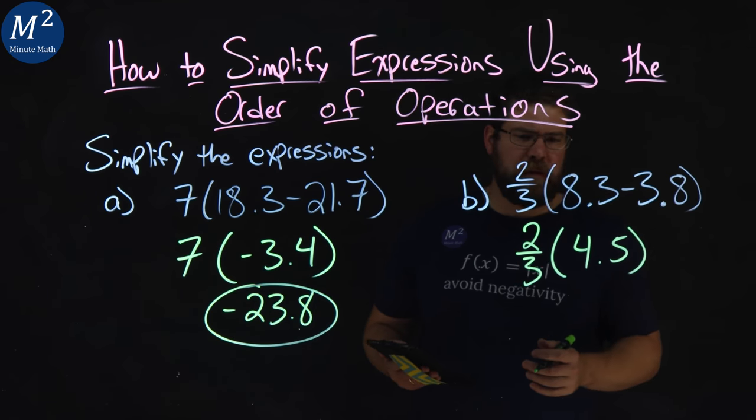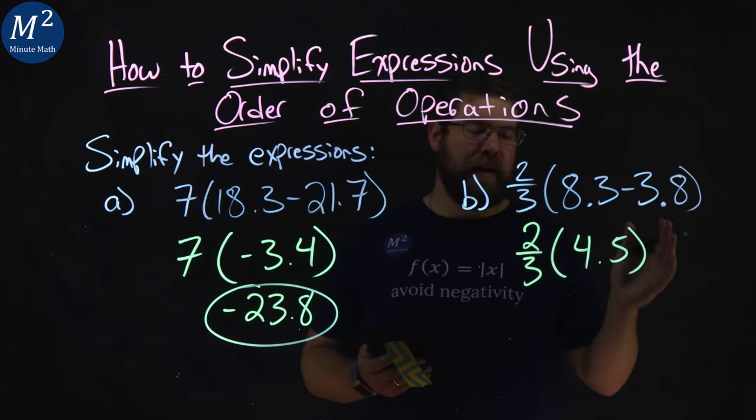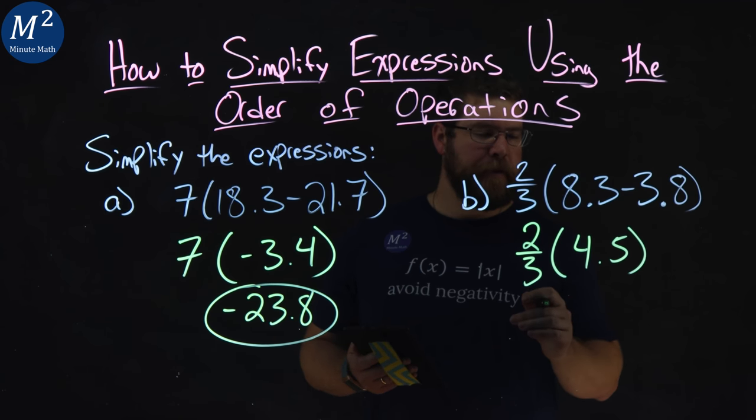Now, you have two options here. If you want to convert two thirds to a decimal, you can try that. But I'm going to show you something a little different here.